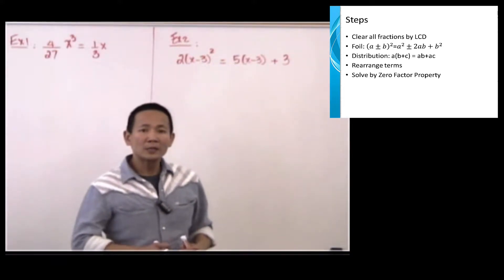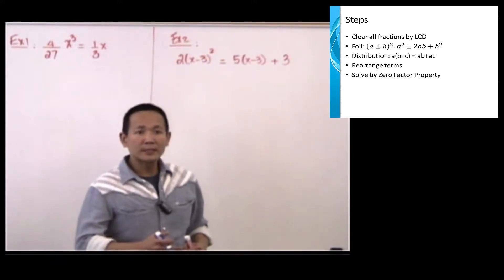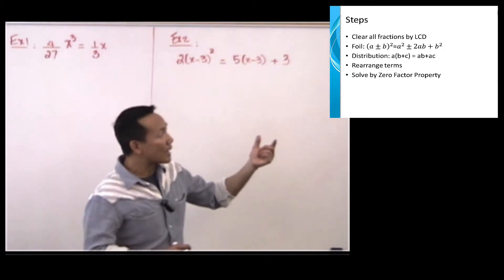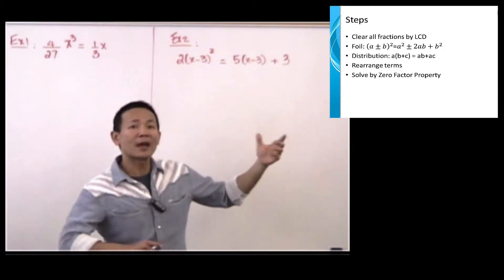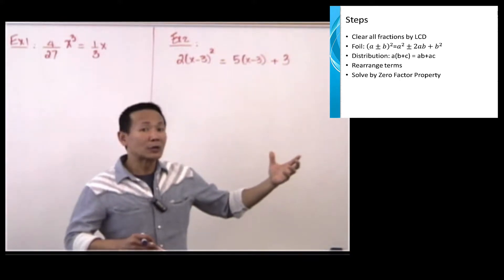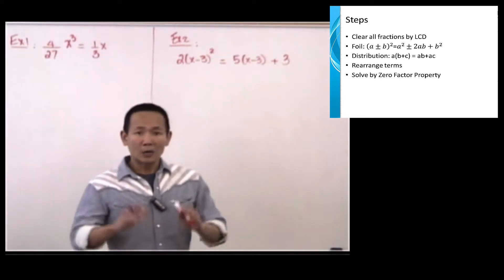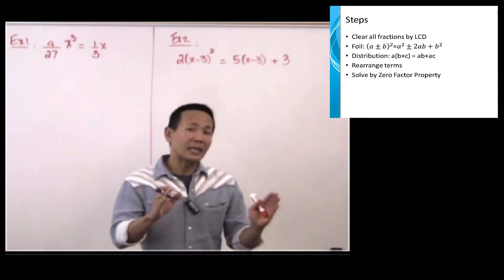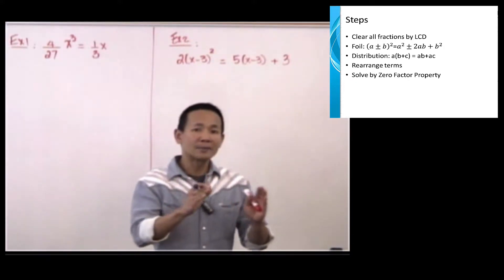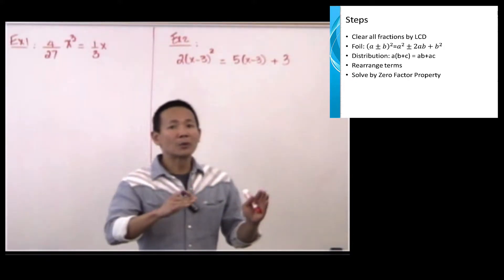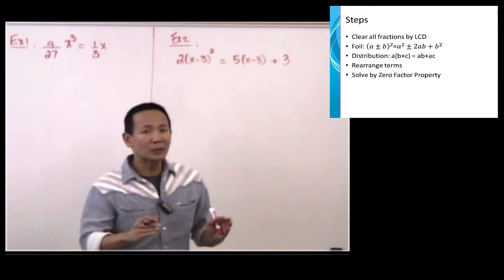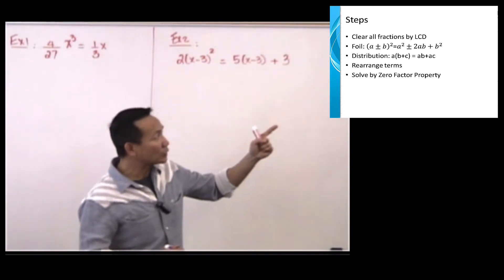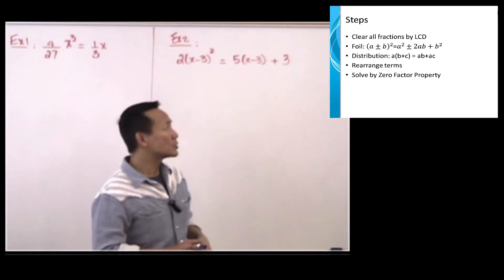The FOIL of the equation is the quantity A plus or minus B to the second power. You can do it mentally or you can FOIL them out mechanically: A plus B times A plus B. Worked out mentally, the answer would be A squared plus or minus 2AB plus B squared.